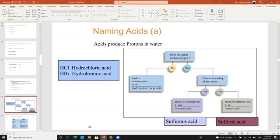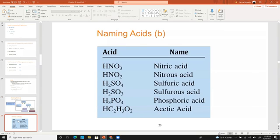Based on their ending you use, you change that to -ous or -ic. So sulfurous versus sulfuric: sulfurous is H2SO3, sulfuric is H2SO4 because sulfite is -ite and sulfate is -ate.